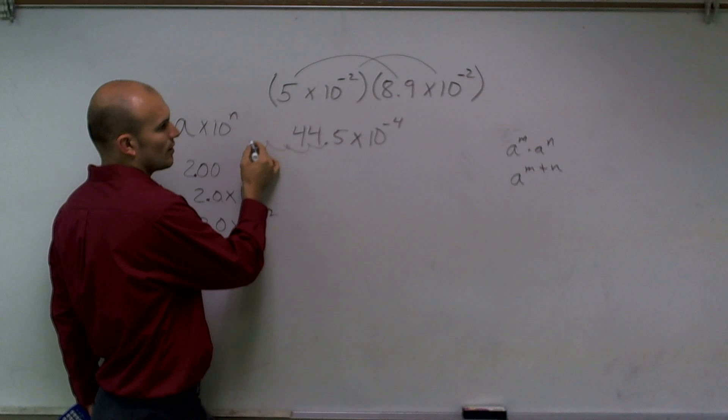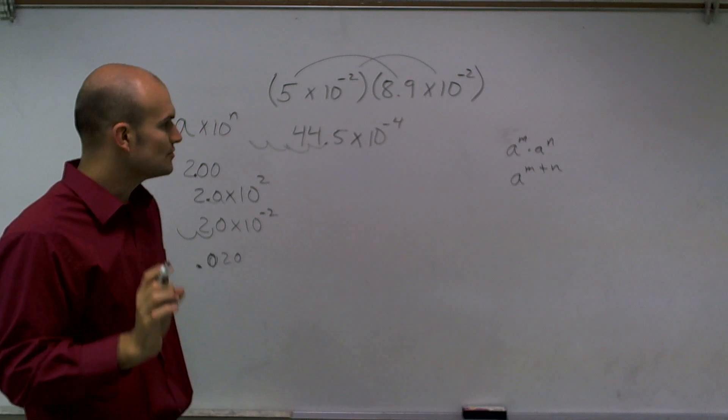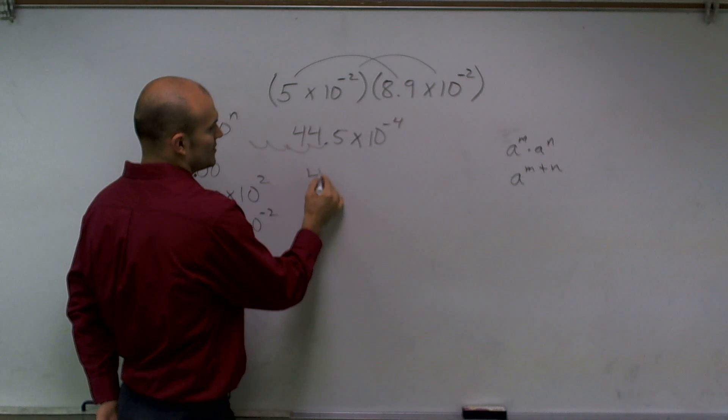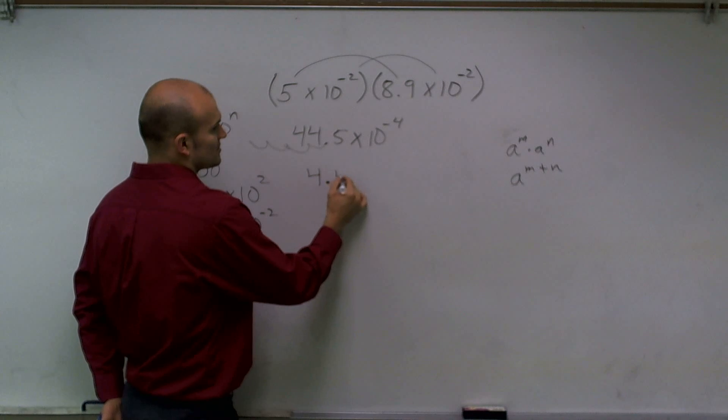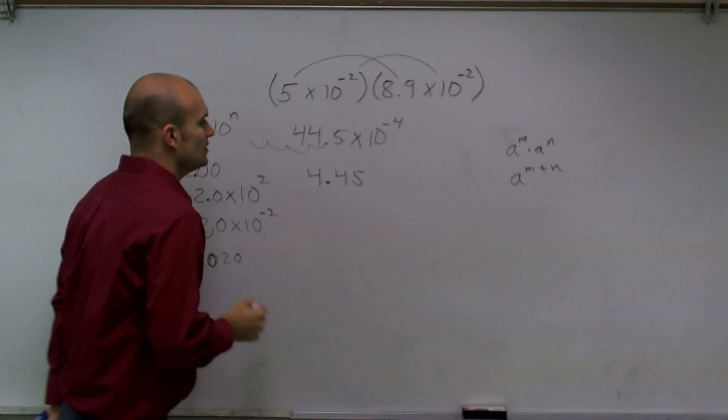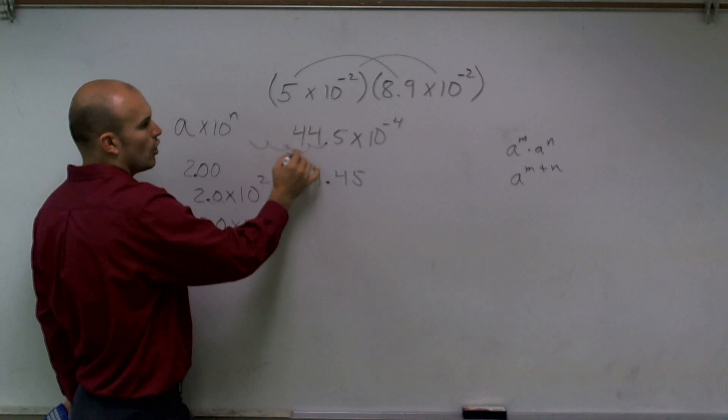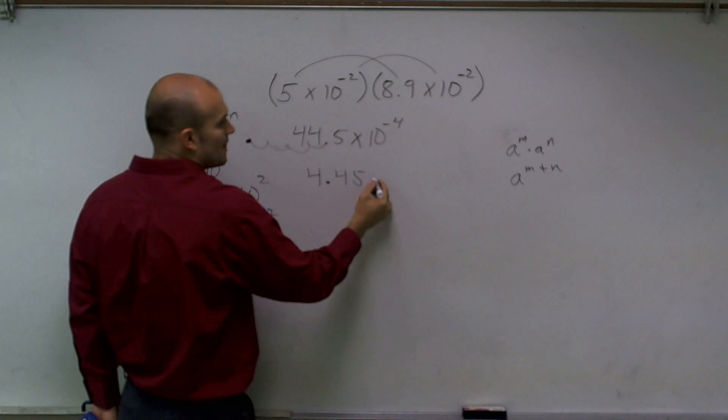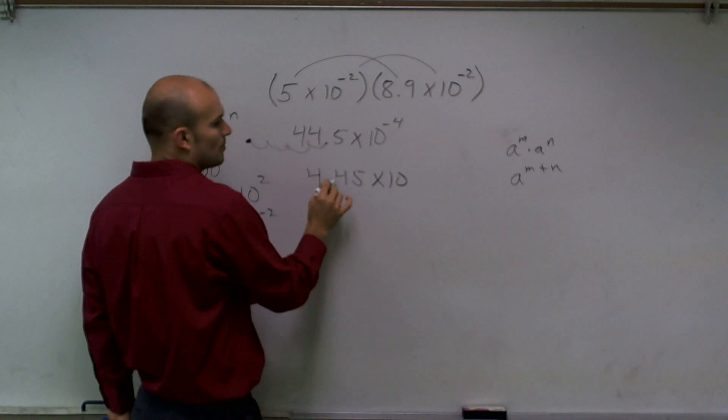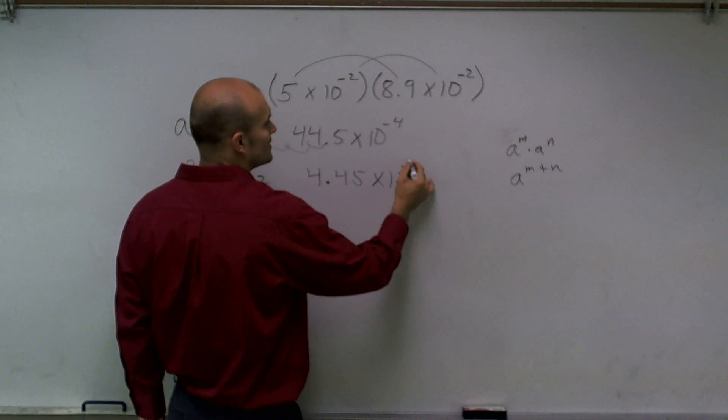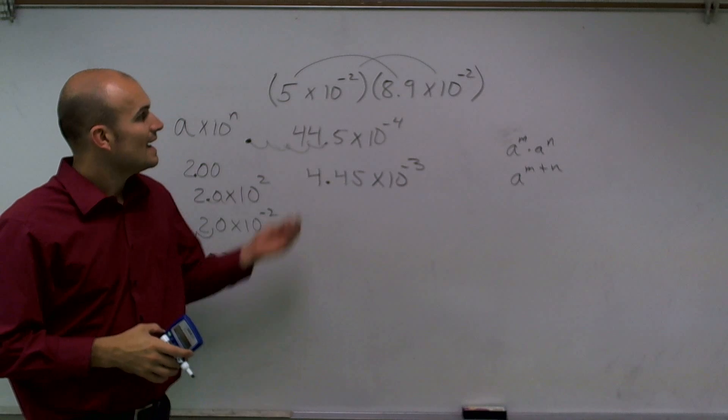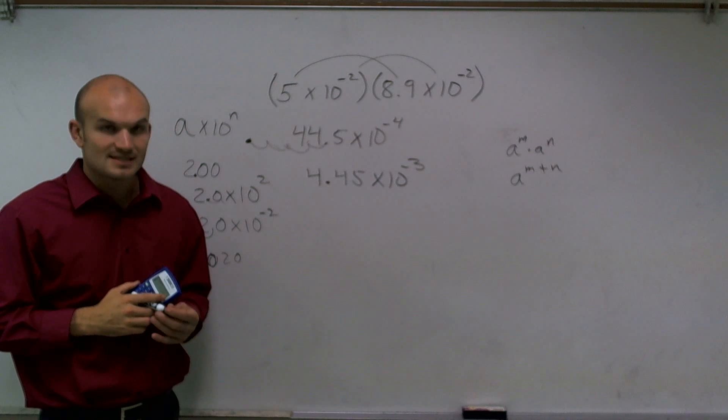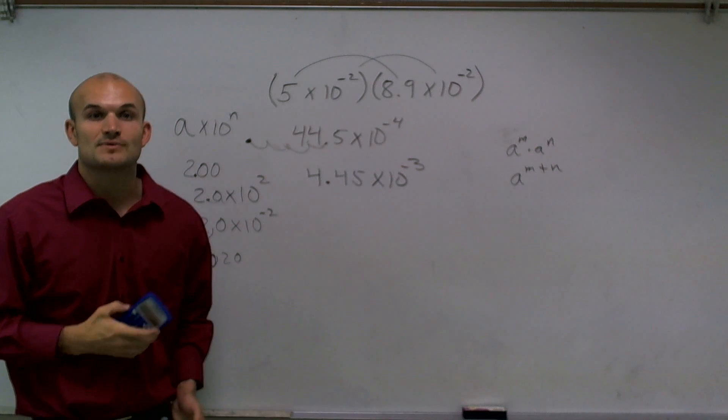That means I'm going to move this over four spots: one, two, three, four. However, this number has to be between 1 and 10, so I have to rewrite this as 4.45. For the original, I had to move it four units to get the decimal point correctly. But if I move it here, now I move it one less spot. Therefore, it's 4.45 times 10 to the negative third power. That's how you multiply scientific numbers with negative exponents. Thanks.